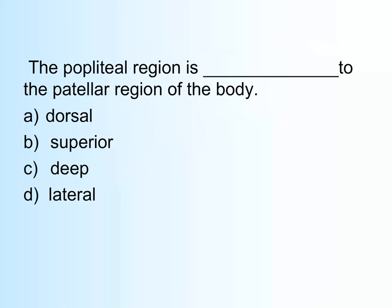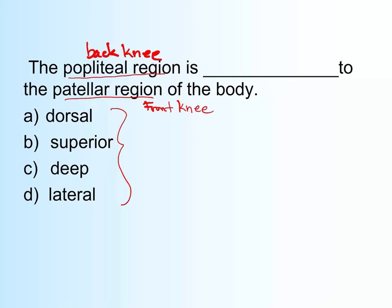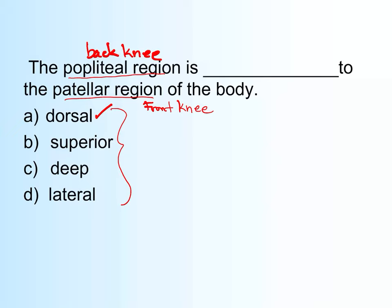The popliteal region is blank to the patellar region. This question tests both your knowledge of regions and directional terms. The popliteal region is the back of the knee; the patellar region is the front of the knee. So the popliteal region is dorsal to the patellar region.